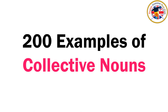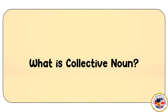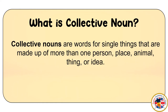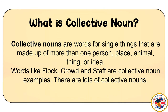200 Examples of Collective Nouns. What is a Collective Noun? Collective nouns are words for single things that are made up of more than one person, place, animal, thing, or idea. Words like flock, crowd, and staff are collective noun examples. There are lots of collective nouns.